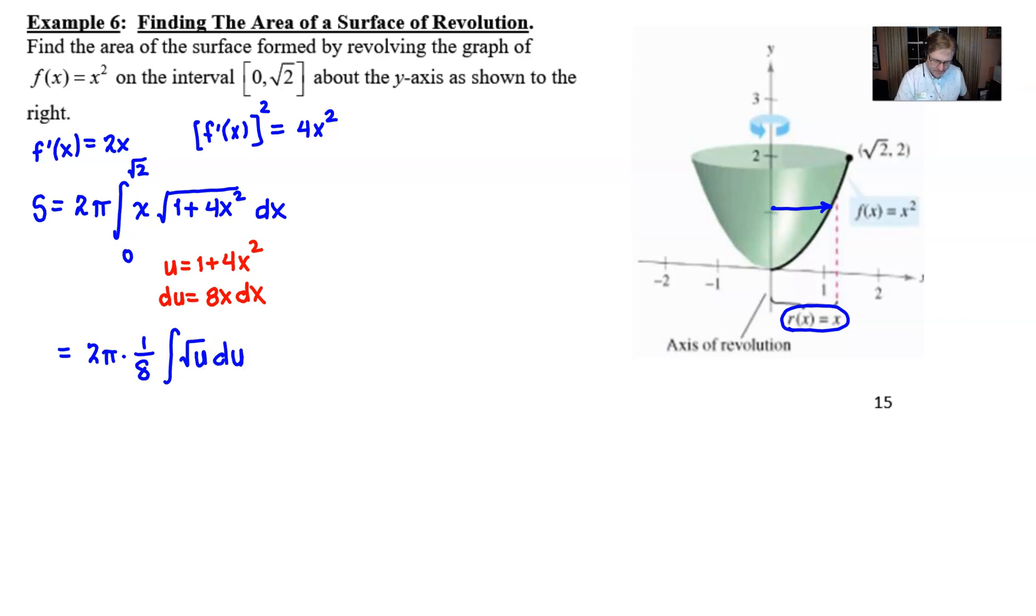Now, about those boundaries. Well, if square root of 2 was the original boundary, I'd like to see if we can write that in terms of u. That way we don't have to back substitute. Well, it turns out that if we insert square root of 2 for our x, we actually get 1 plus 4 times 2, which is 9. And so that's a pretty clean boundary. I'm going to go with it. And if we do the same thing for 0, this one's perhaps a little easier because 1 plus 4 times 0 squared is just going to be 1. And now we have a nice pretty lower boundary.